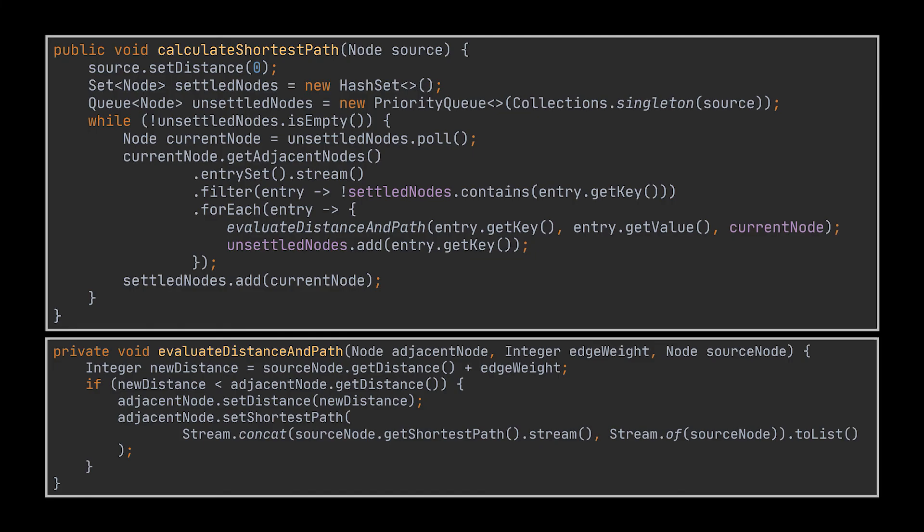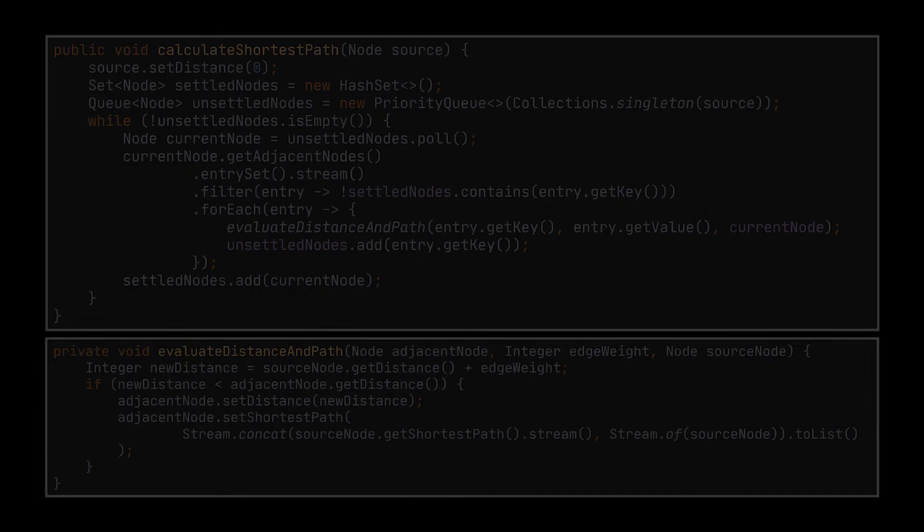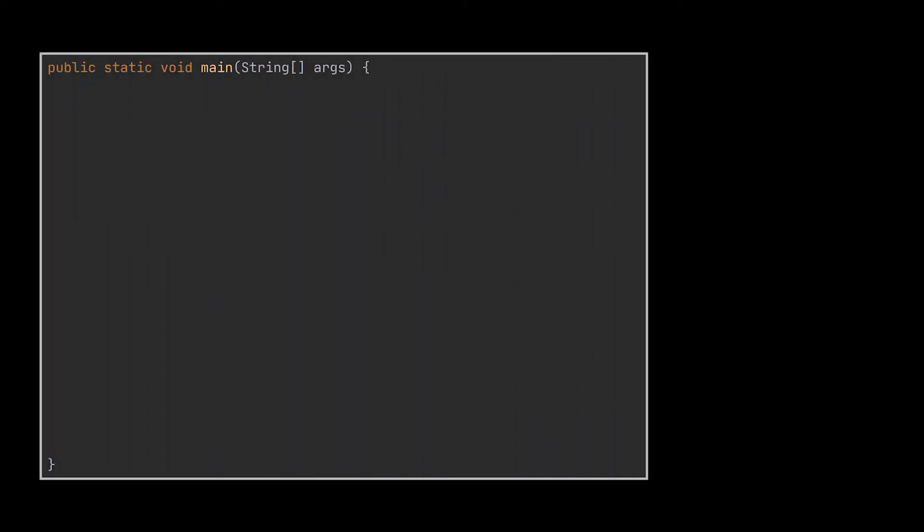To update the path, we just add the node we are currently at to the path at hand. And that's it, the Dijkstra algorithm implemented in Java.